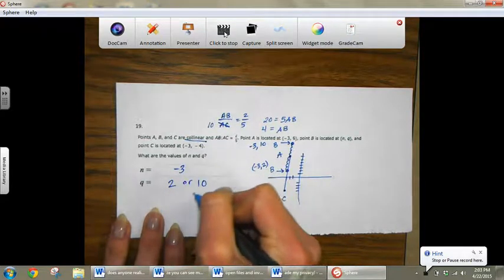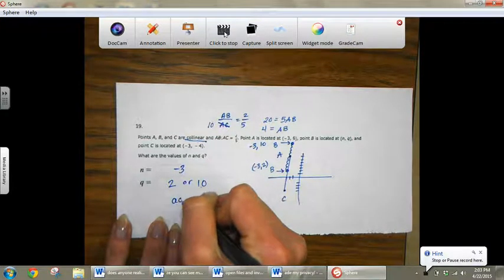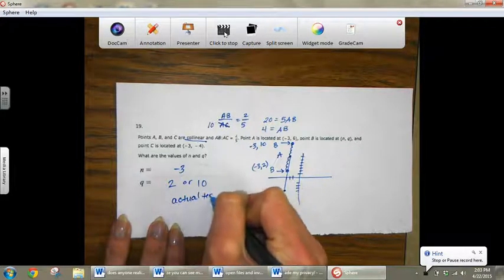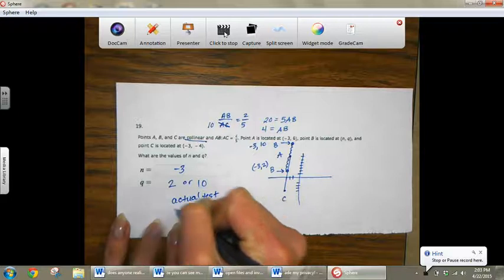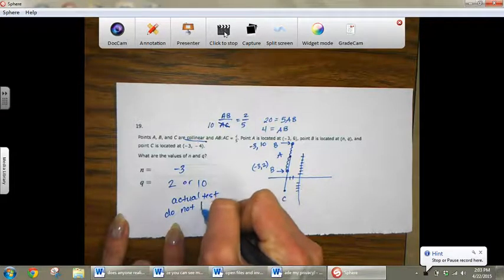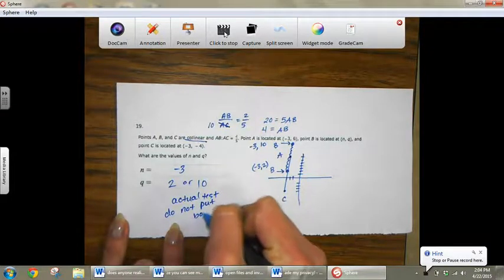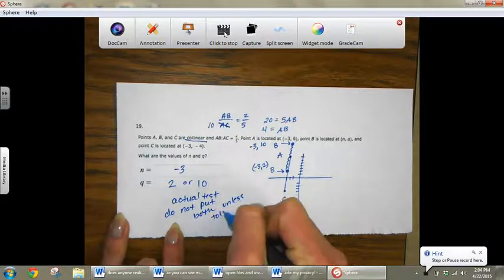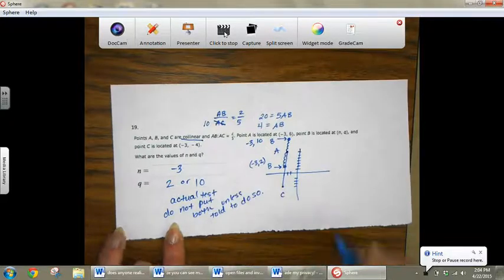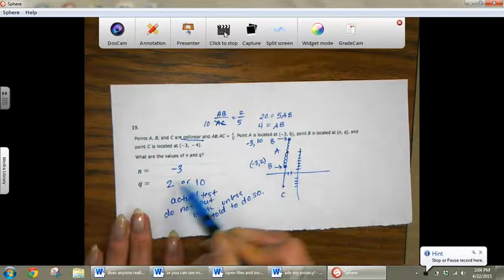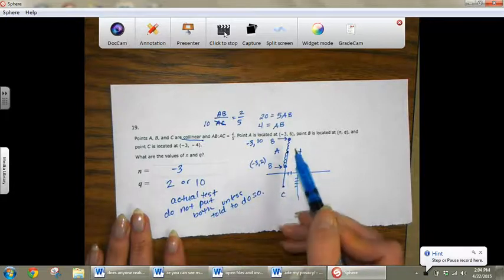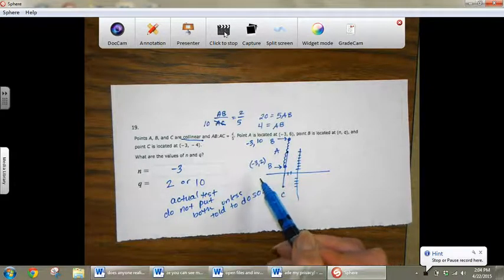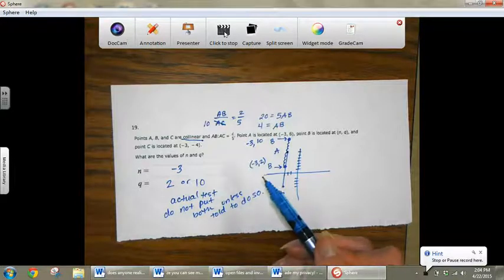If it was the actual FSA test, you would not put both unless told to do so. So I don't think you can put two answers in here, but I just wanted to let you know. Maybe they would say something like, if B is not in between A and C, then where is B, or something like that.